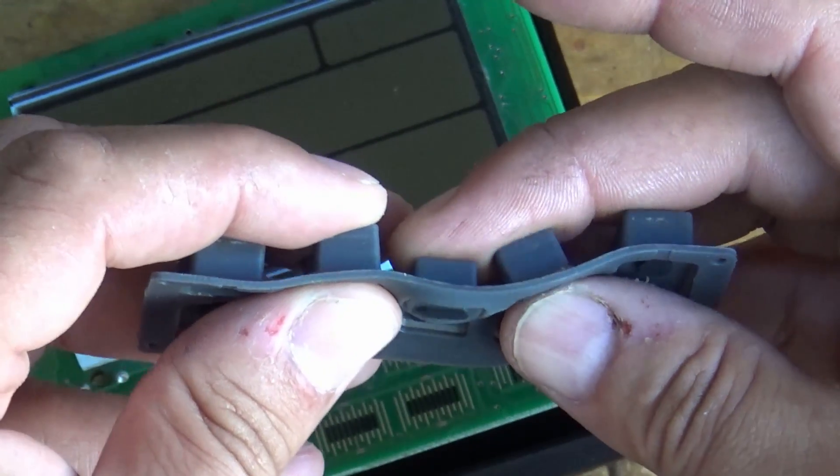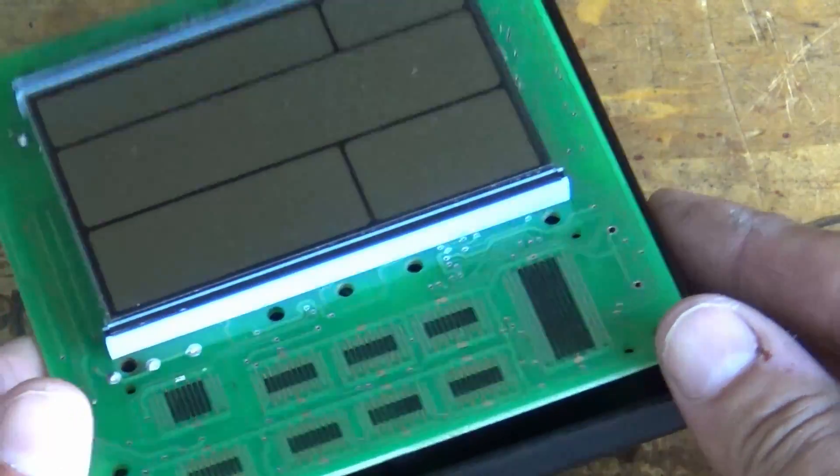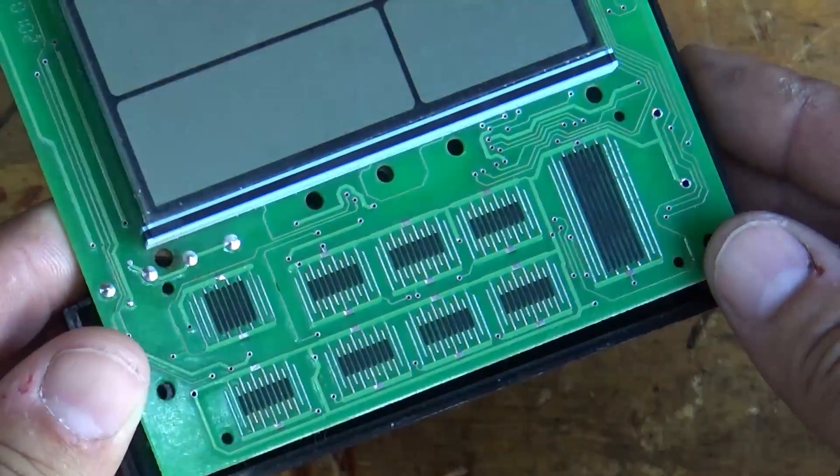On the bottom of these buttons you can see these little pads effectively they're carbon impregnated pads and what they do is when you push the button that little pad pops forward and it makes contact with those PCB tracks there.